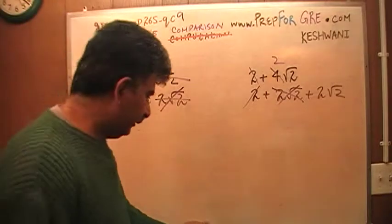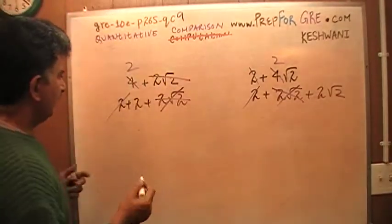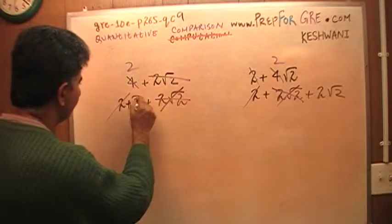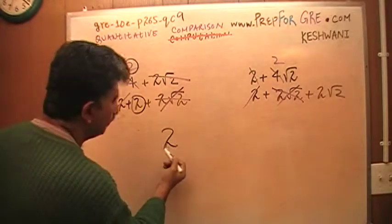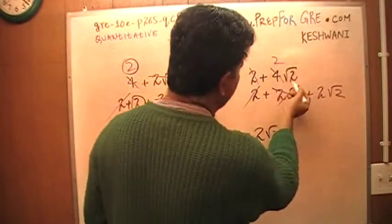So basically what they want you to compare, nothing else is left on this side. What they want you to compare is this 2 that you see here. This 2 right here. They want you to compare 2 versus 2 times root 2. You see? 2 times root 2 right here.